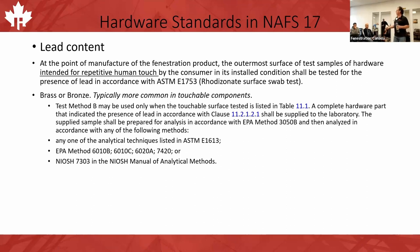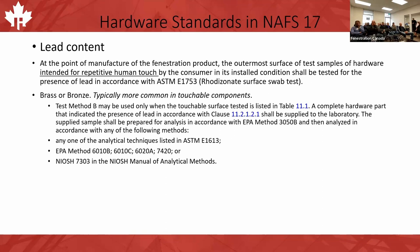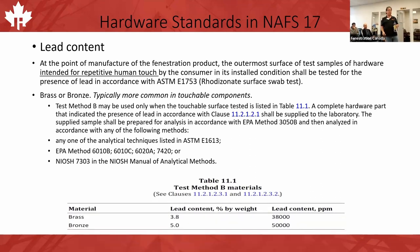Brass and bronze are typically the materials you'll run into for touchable hardware components like door handles. Test method B should only be used when the touchable surface tested is listed in Table 11. Complete hardware parts indicating the presence of lead shall be analyzed in accordance with EPA Method 3050B. There are very specific lead level limits that brass and bronze materials must meet, so be aware if you're dealing with hardware that has the potential for lead.